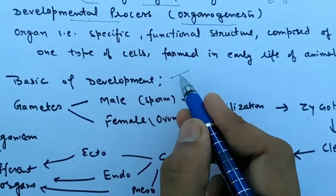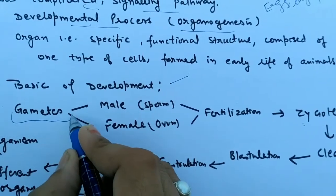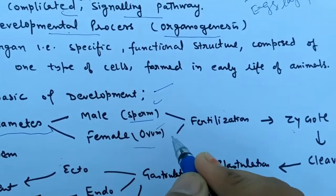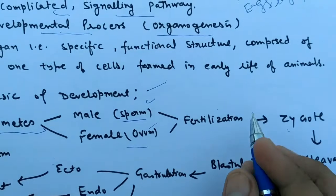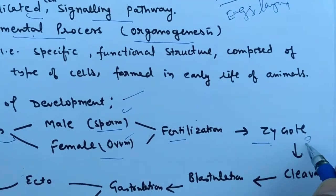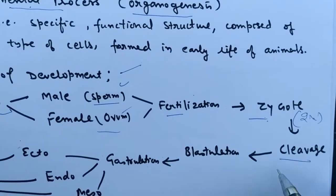If we see the basic pattern of development, first gamete genesis occurs, then male and female gametes are distinctly formed, and fertilization occurs. Then a diploid structure is formed, the zygote, then cleavage.